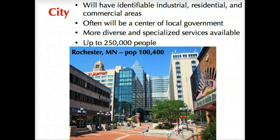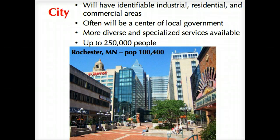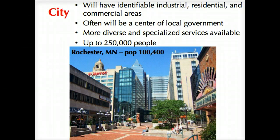A city starts to have more defined industrial, residential, and commercial areas — you'll start to see neighborhoods, and particular parts of the urban area defined by those services or urban and suburban housing. There's going to be some sort of central government with a greater presence of organization and higher level, more specialized services. Rochester, Minnesota is a perfect example, with the Mayo Clinic being a very highly specialized type of medical service — people travel from all around to come into the core and utilize those specialized services.